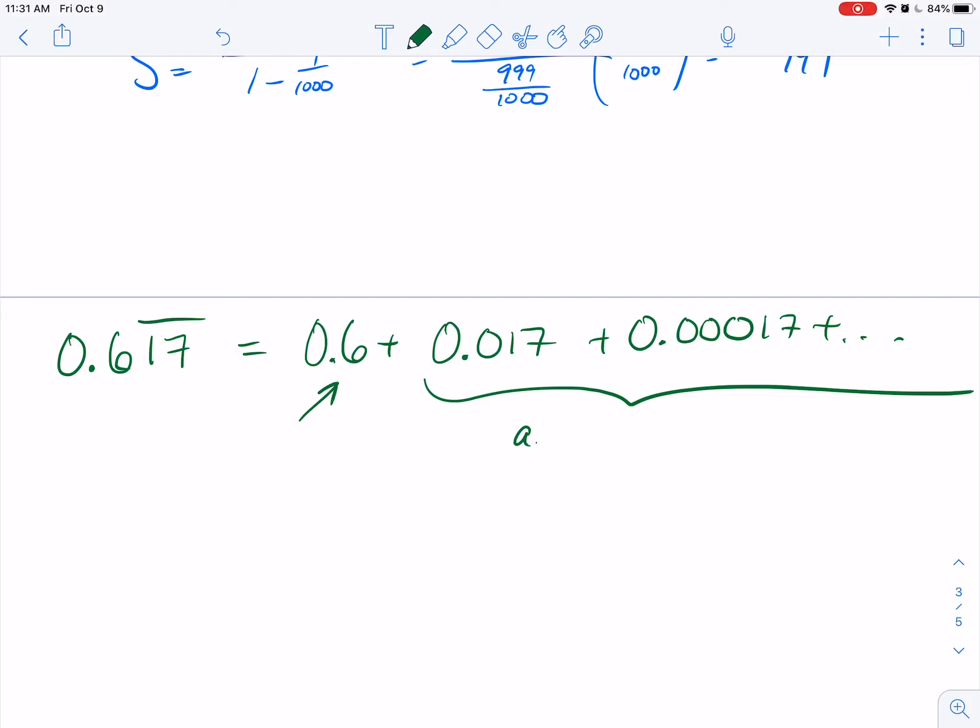In this infinite geometric series, we have that a sub 1 is 17 over 1000, and our common ratio is 1 over 100. Notice that I had 17 over 1000, and this becomes 17 over 100,000, so I had to multiply by 100 to get to that new value.